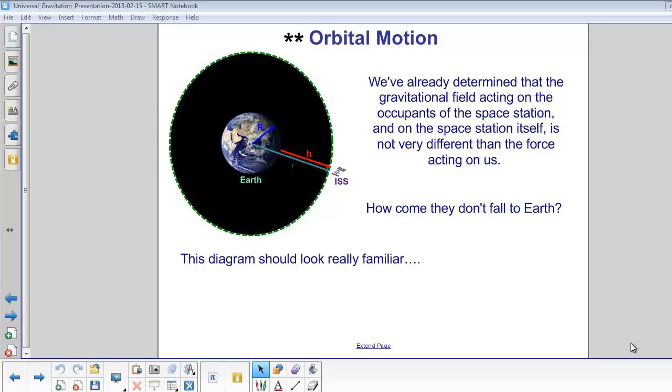We've already determined that the gravitational field acting on the occupants of the space station and the space station itself is not very different than what's acting on us. So how come they don't fall to Earth?